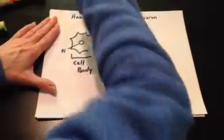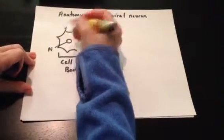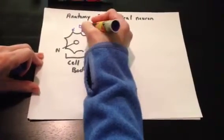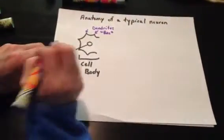These small short extensions are dendrites, and the dendrites are the receptive regions because they're going to receive the stimulus or the neurotransmitter.